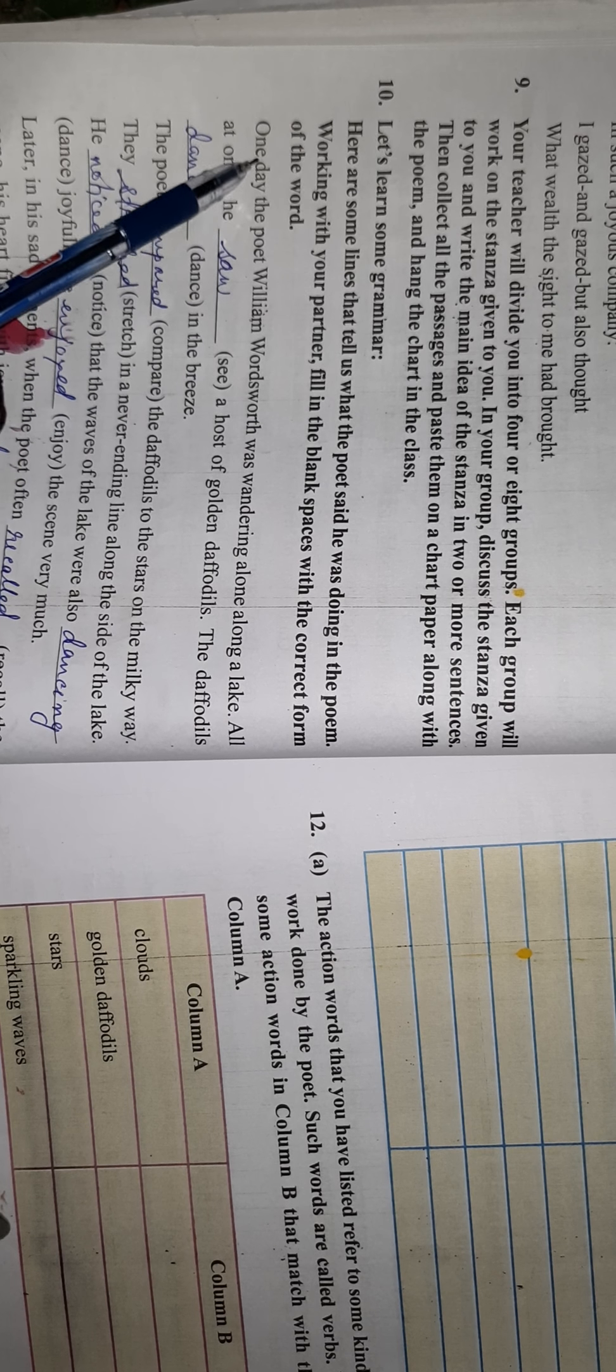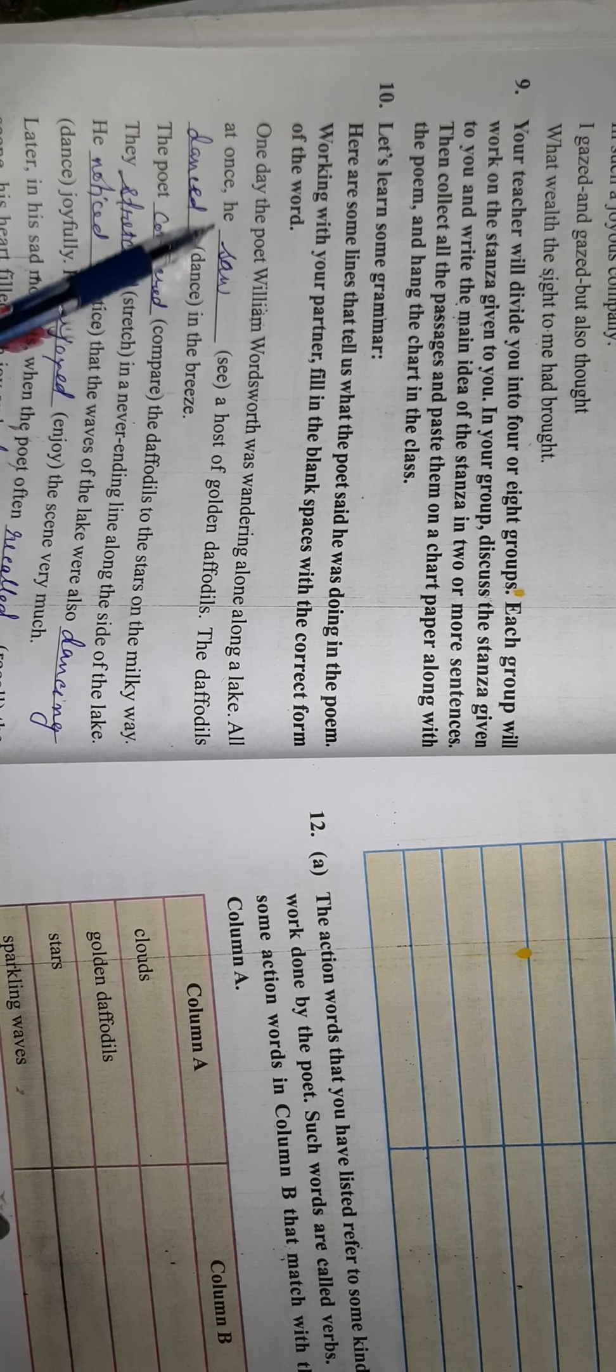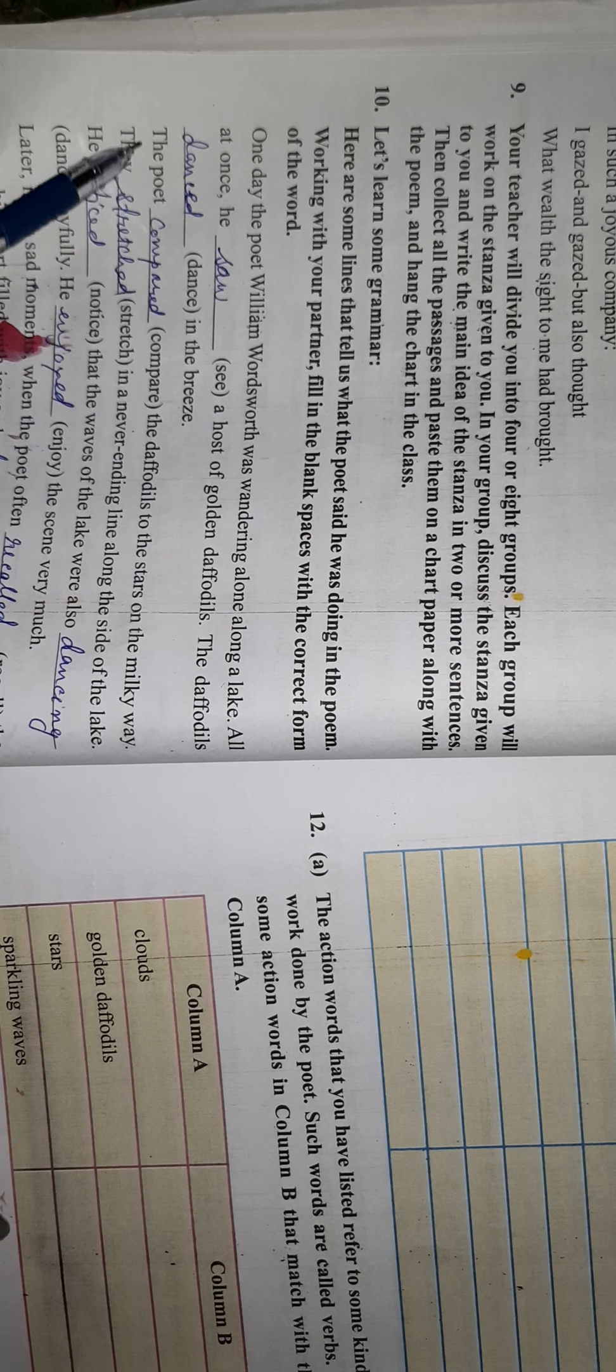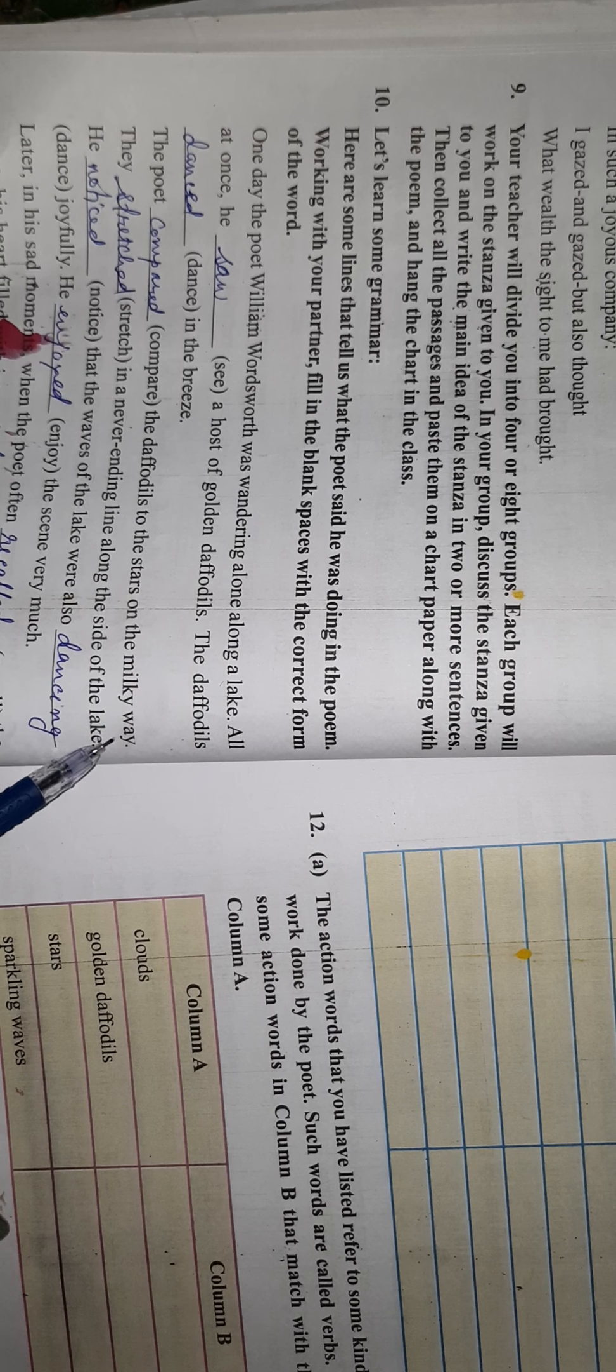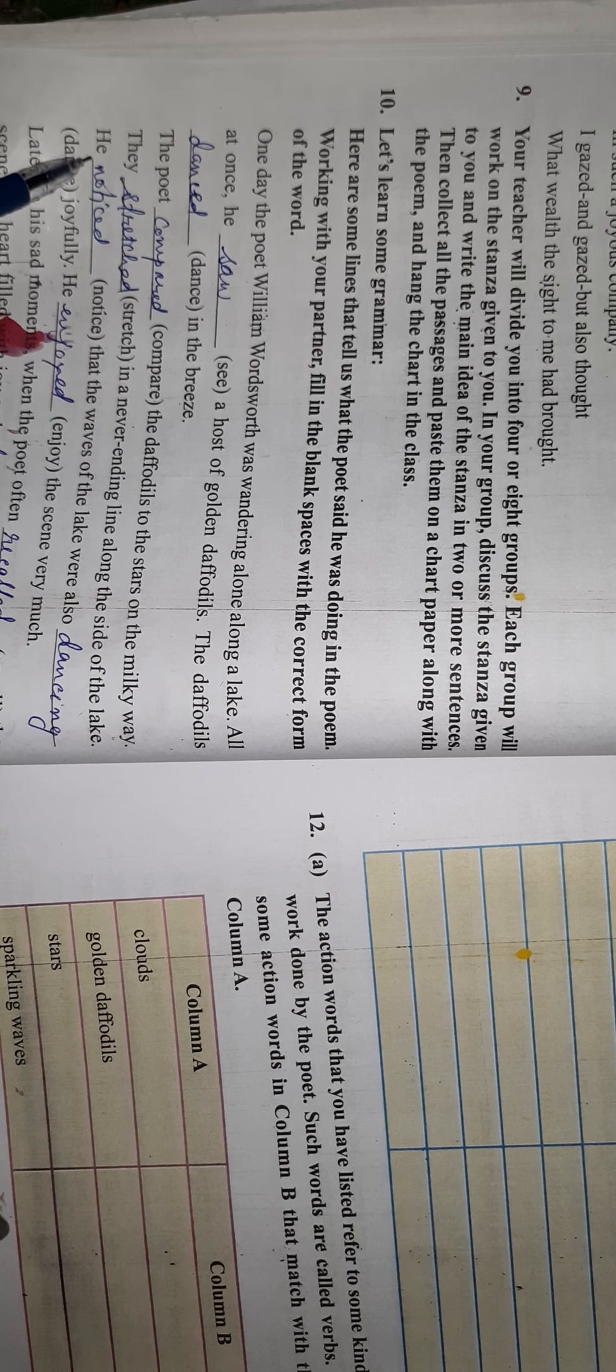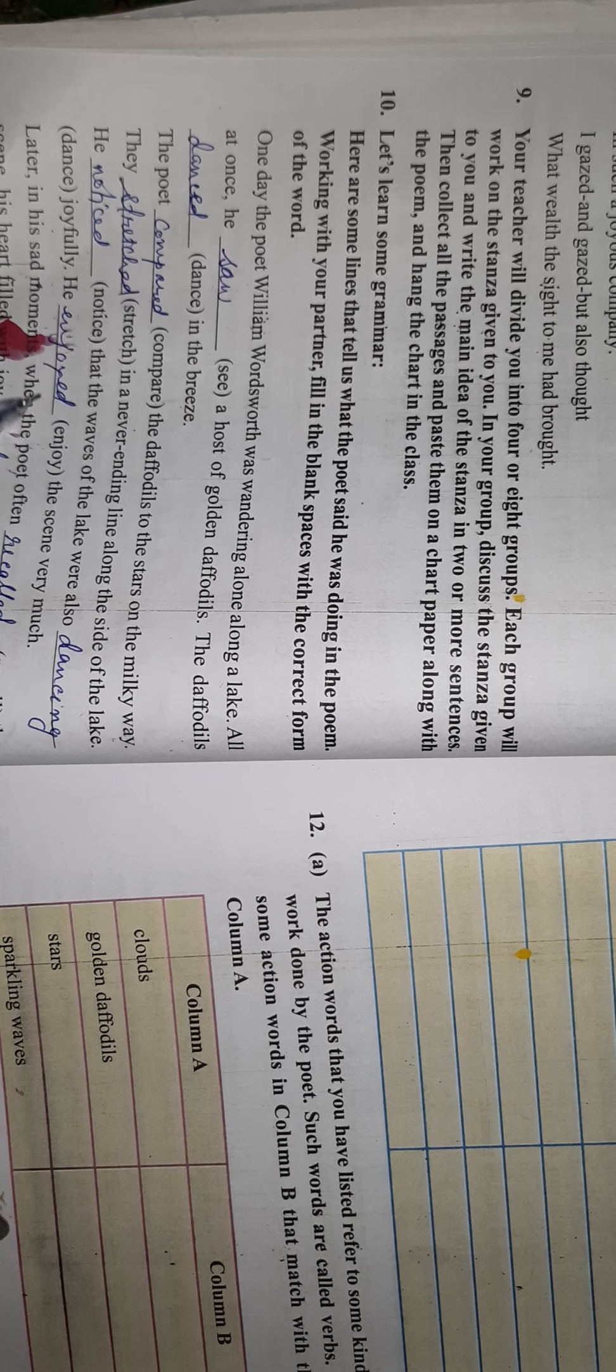One day the poet William Wordsworth was wandering along a lake. All at once he saw a host of golden daffodils. The daffodils danced in the breeze. The poet compared the daffodils to the stars on the Milky Way. They stretched in a never-ending line along the side of the lake.